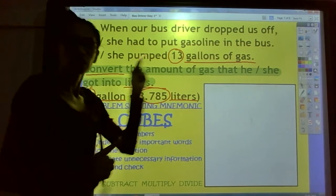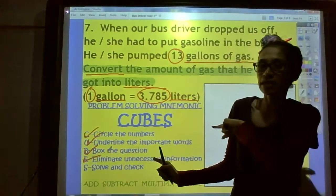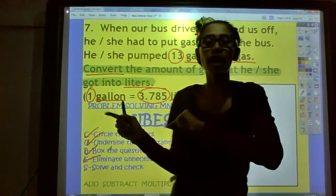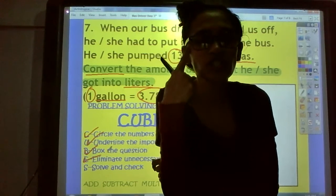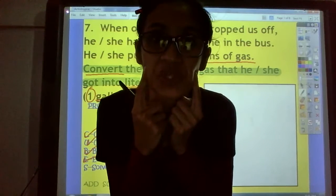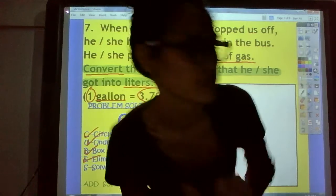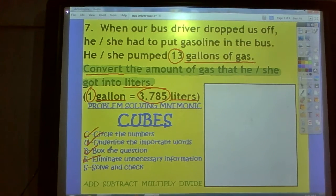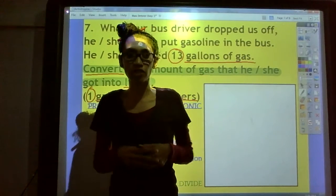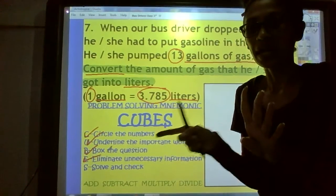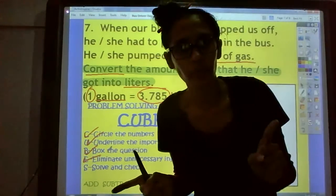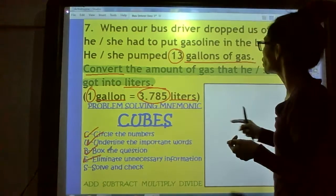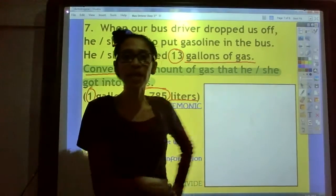And the last step in our CUBES. So, solve problems is the S step. And the S step is to solve and check. We solve and check. Now, to solve the problem, we need to figure out what type of operation, what type of math operation do we need to do? There are four. Back to our math operations. There are four. What are they? It's right there. We can add, subtract, multiply, or divide. What do we need to do? Let's imagine. Let's think about it. Imagine 13 gallons.